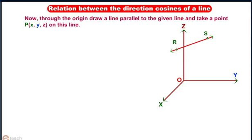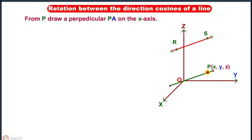Through the origin, draw a line parallel to the given line. Take the point P on this line. From P draw a perpendicular Pa on the x-axis.